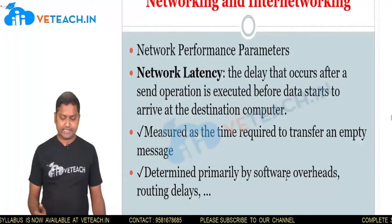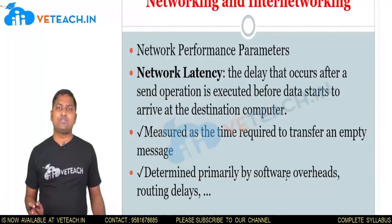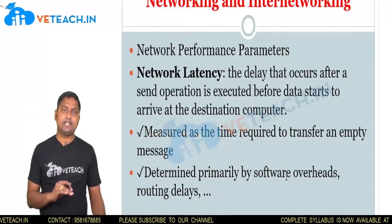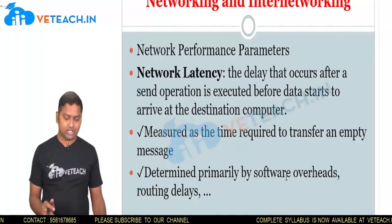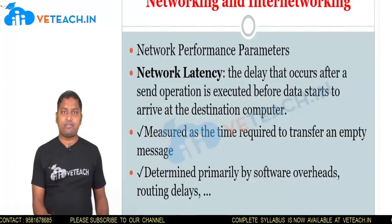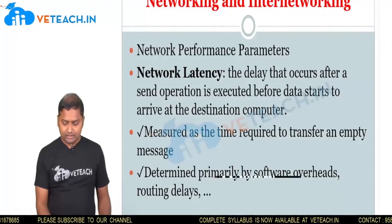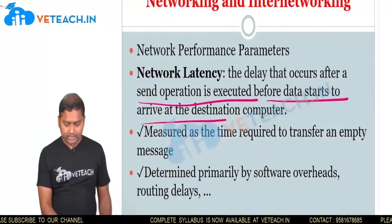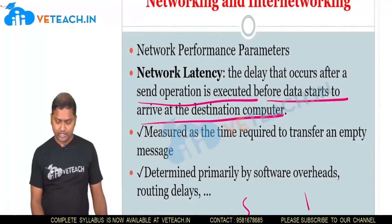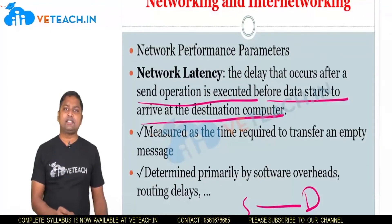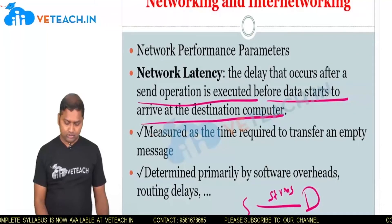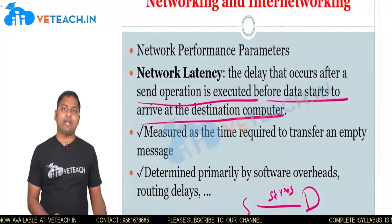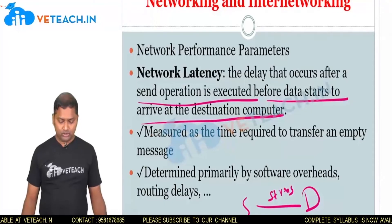What are the network performance parameters? When you are sending data, whether your systems are connected in a network or not — for that, these are the network performance parameters. Network latency is the delay that occurs after a send operation is executed before data starts to arrive at the destination computer. It is measured as the time required to transfer an empty message — how much time is required for transmitting data from one place to another.